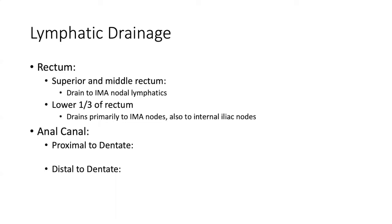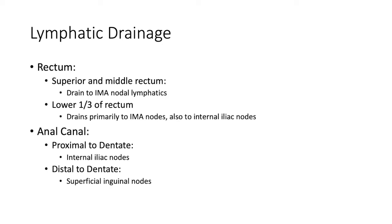Does anyone know the lymphatic drainage of the anal canal proximal to the dentate line? It's going to be just below the lower third of the rectum, starting to involve the internal iliac nodes — so primarily the internal iliac nodes. How about distal to the dentate line? It'll be to the superficial inguinal nodes. That is very pertinent when you're evaluating a patient in clinic.